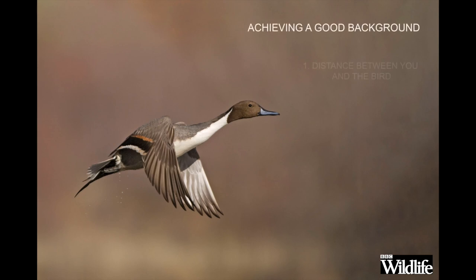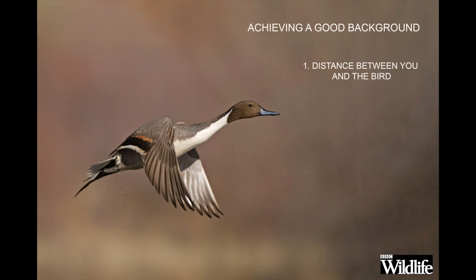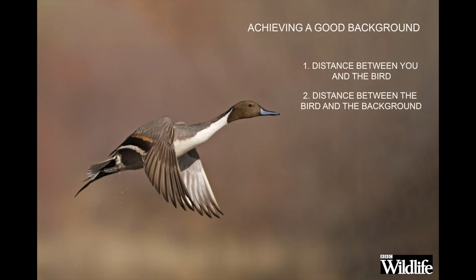To achieve an undistracting and blurry background, you need to take six different things into consideration. First up, we have the distance between you and the bird. Generally speaking, the further away the bird, the harder it is to blur the background, because you're shooting more towards the infinity end of the lens and therefore the background is more likely to be in focus. The trick is to be as close to your subject as you possibly can. The distance between the bird and the background is equally important — if the background is a long way from the bird, it's much easier to blur it into that smooth colour wash. If it's too close to the bird, it's very difficult or impossible to blur it. The greater the distance between the bird and the background, the better.